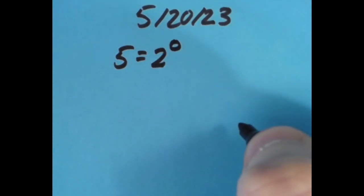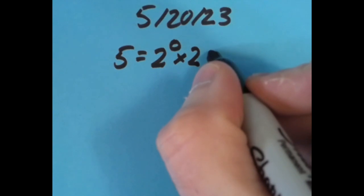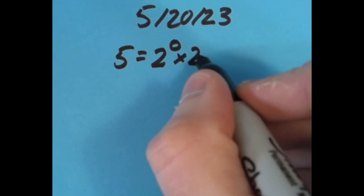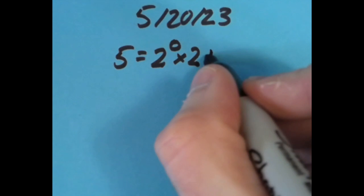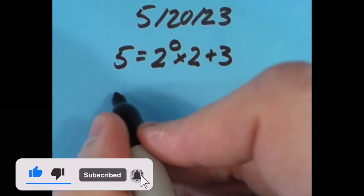What I came up with is that 5 equals, then I said let's do 2 to the zero power. Now any number to the zero power except for zero is going to be 1, so this is just 1 times 2. So 1 times 2 is 2, plus 3 is 5, and that's what I did. But I tried it some other ways with the equal sign in different spots.